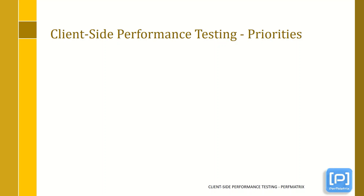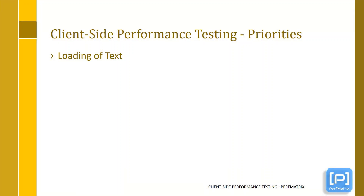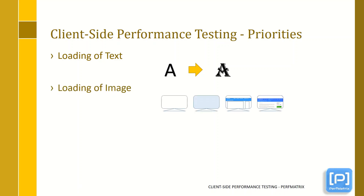Now we will understand the priorities of client-side performance testing. The first is loading of text, which is when the text content is visible to the user — possibly not in the actual font. You might have observed on some websites that text content is loaded first in the default font and after a few seconds the actual font becomes visible. The second is loading of images, which is when the largest content is visible to the user.